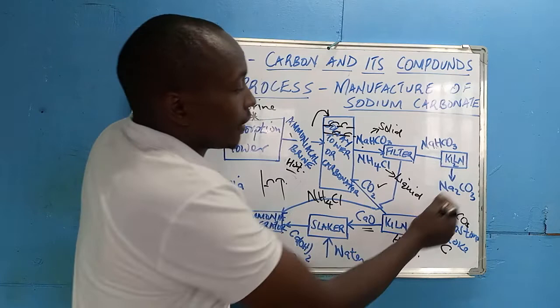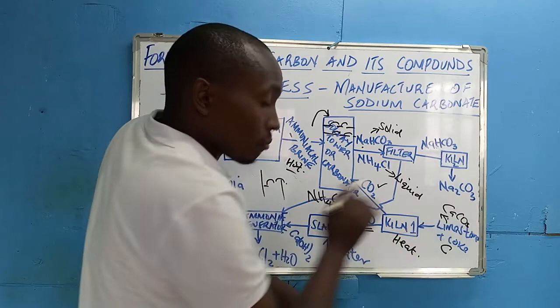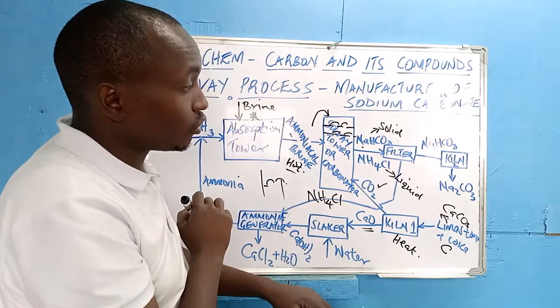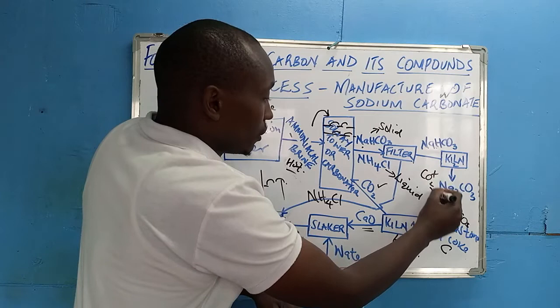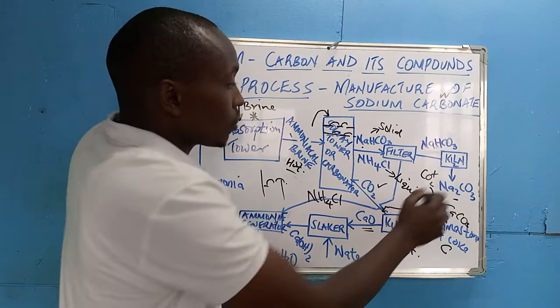Sodium hydrogen carbonate is taken to a kiln and heated. When sodium hydrogen carbonate is heated, we get sodium carbonate — the substance we want to manufacture. In the process, carbon dioxide is also produced and can be recycled back into the carbonator. Water is also produced and can be used within the process.